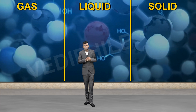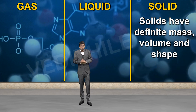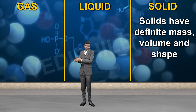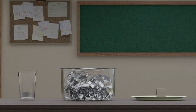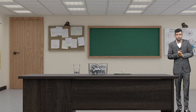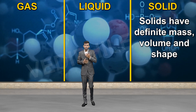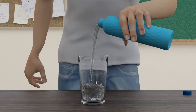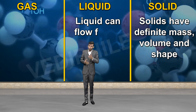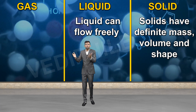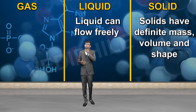Solids have definite mass, definite volume, and definite shape — for example, an ice cube, a glass, or a plate. Their shape and volume don't change unless temperature or pressure is changed. Liquids like water can flow freely, and while their volume is fixed, their shape is not — water poured into a bottle, glass, or bowl takes that container's shape.